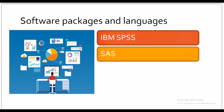The second one is SAS. SAS is a statistical software developed by SAS Institute for data management, advanced analytics, multivariate analysis, business intelligence, criminal investigation, and predictive analytics. SAS programs have data steps which retrieve and manipulate data, and proc steps which analyze data. Each step consists of a series of statements.